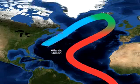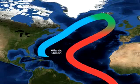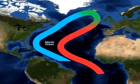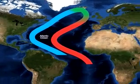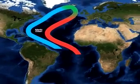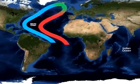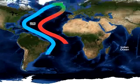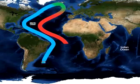dense water. This cold, dense water sinks to the ocean floor, pushing its way to the equator, along the east coast of North and South America, and then into Antarctica. This process is referred to as deep water formation.